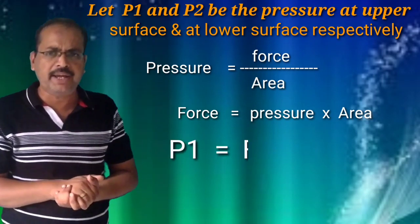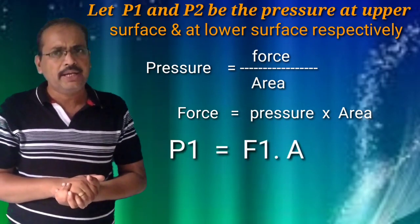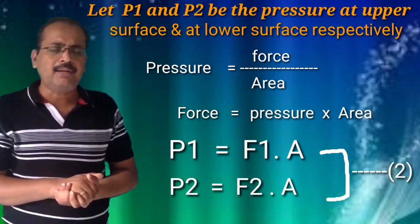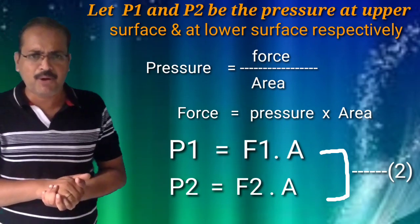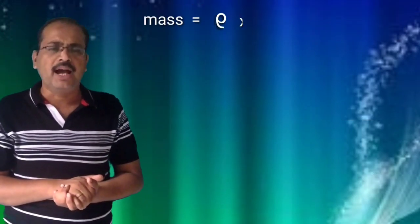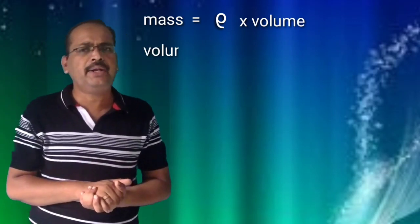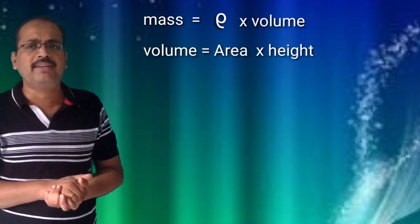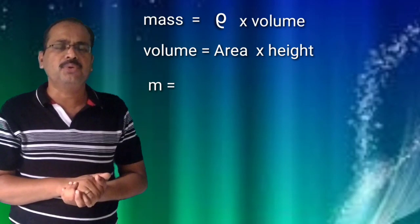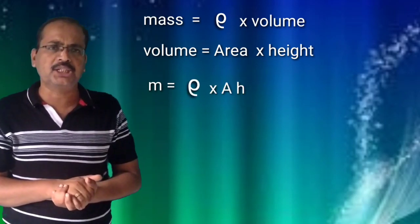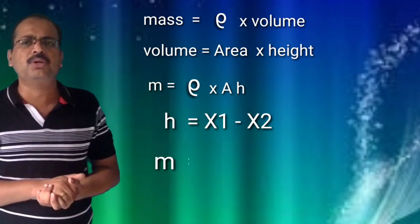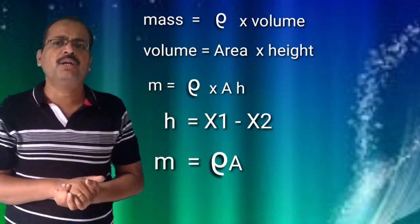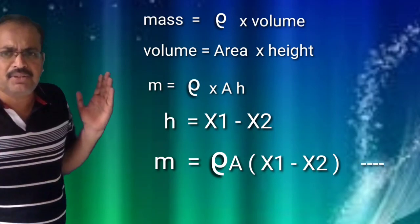So P1 is equal to F1 over A and P2 is equal to F2 over A. This is equation number 2. Now, density is equal to mass upon volume, therefore mass is equal to rho into volume. Volume is equal to area into height. So M is equal to rho into A into H, and since H equals X1 minus X2, M is equal to rho times A times (X1 minus X2). This is equation number 3.